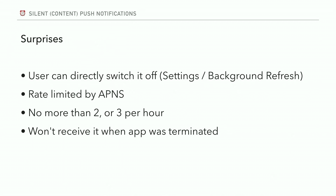There are some surprises here too. Users can directly switch off silent push by switching off background refresh — the same switch — which is a problem because users don't know this was implemented in your app since you never asked for permissions. So they might inadvertently break critical functionality. The answer is: do not implement critical functionality on top of silent push notifications, because they might not get delivered. Other reasons they may not deliver: they're rate-limited by APNS — Apple's suggestion is not to send more than two or three per hour. They also depend on iPhone conditions like battery health, and the app won't receive them when the app was force-terminated.